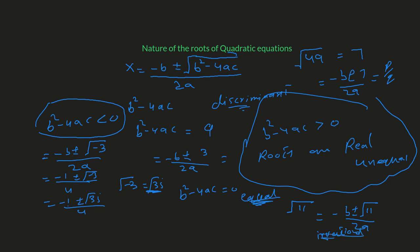Irrational numbers appear in the form of square roots, like square root of 3, square root of 2, or 3 times square root of 11 — these are all irrational. So we get irrational roots whenever the discriminant under the radical is not a perfect square.